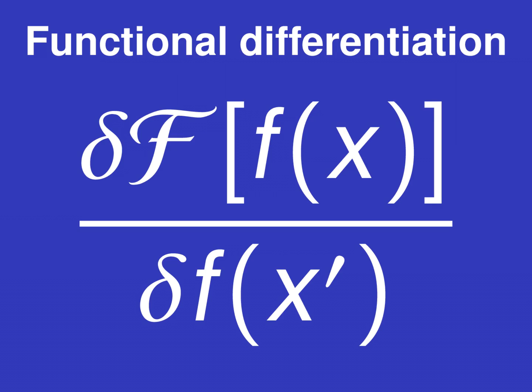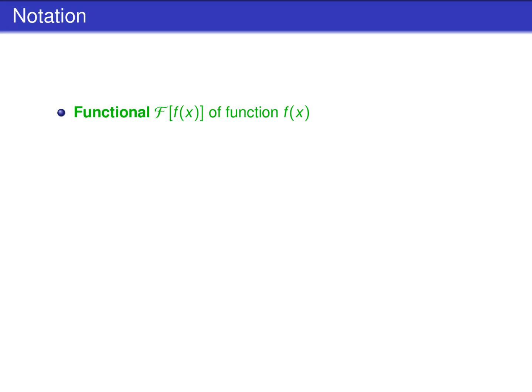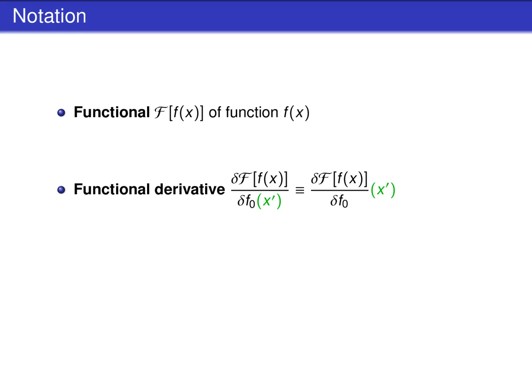In this video, I will explain functional differentiation — how to derive a functional. We consider a functional uppercase F of a function lowercase f of x. Its functional derivative with respect to the function lowercase f is written with a delta instead of a d. This helps to distinguish the functional derivative from the derivative of a function. The functional derivative at a function lowercase f0 of x' can be written either in the denominator or to the right of the derivative, similar to derivatives of functions.